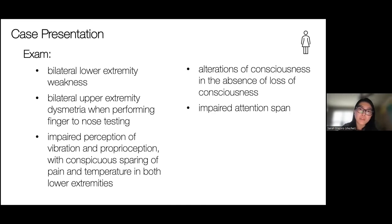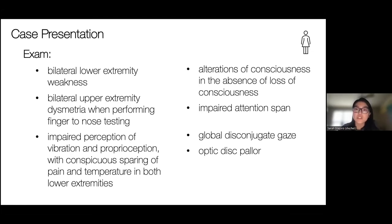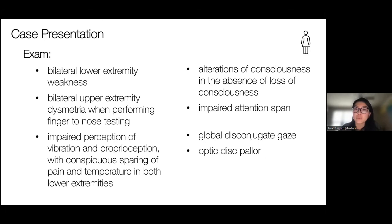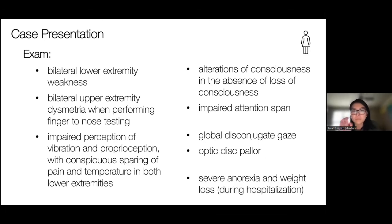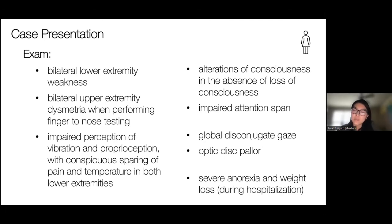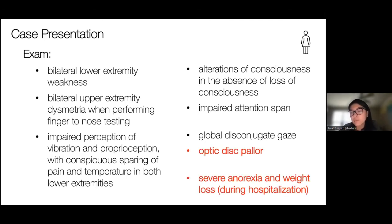For the encephalopathy portion, she had alterations of consciousness in the absence of loss of consciousness and impaired attention span. The ophthalmoplegia presented as global disconjugate gaze — affecting all cranial nerves related to the movement of her eyes. She also had optic disc pallor and severe anorexia and weight loss during hospitalization. Those don't necessarily go directly with Wernicke's encephalopathy, but it's something we'll keep in our back pocket to explain later.